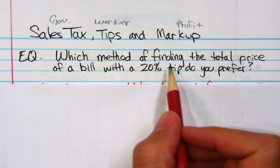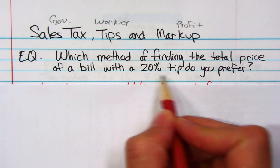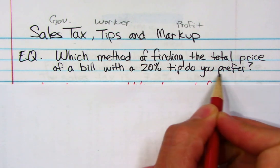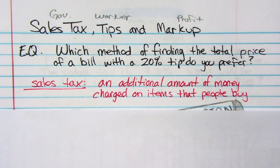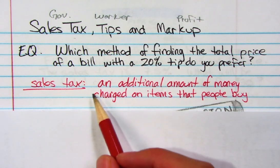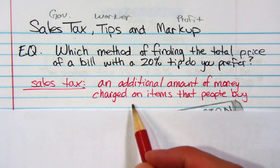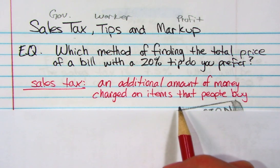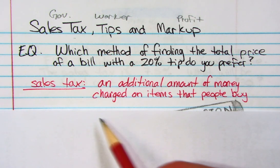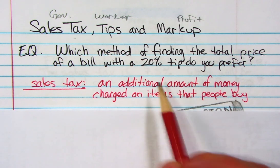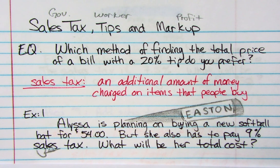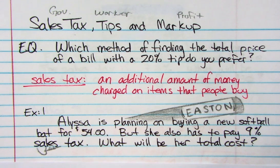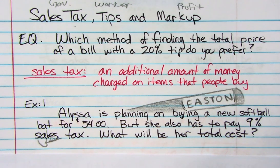At the end of this video, you'll have a choice of which method you prefer for finding the total price of a bill with a 20% tip. First, sales tax — the definition is an additional amount of money charged on items that people buy. When you go buy something, you've got taxes on it, that's called sales tax. For example, Alyssa is planning on buying a new softball bat for $54, and she also has to pay a 9% sales tax. What's her new total cost?